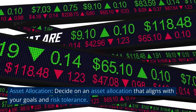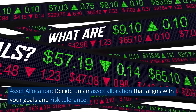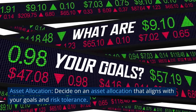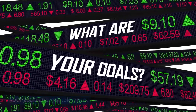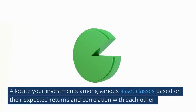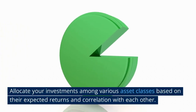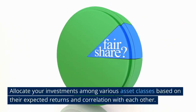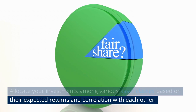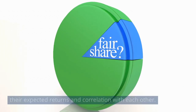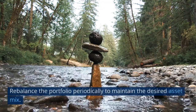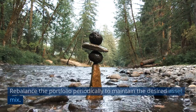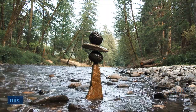Asset Allocation: Decide on an asset allocation that aligns with your goals and risk tolerance. Allocate your investments among various asset classes based on their expected returns in correlation with each other. Rebalance the portfolio periodically to maintain the desired asset mix.